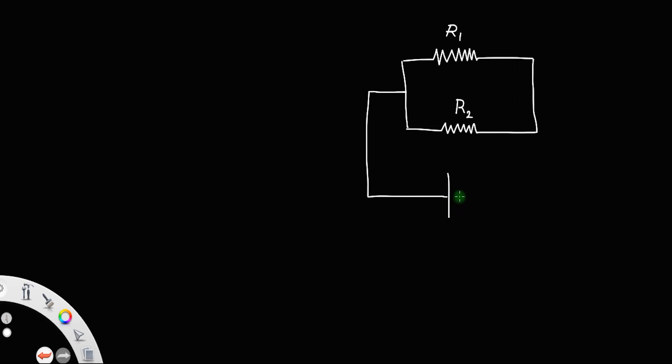Across a cell of voltage V. This is the positive side and this is the negative side. Let us call these two points A and B, and these two points act as a junction.